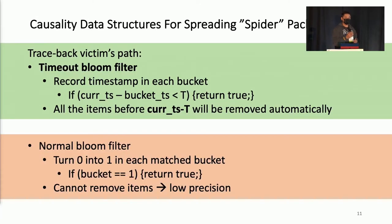To spread those spider packets, we are using causality information maintained in the switches, which is a probabilistic data structure. For example, to trace back the victim's path, we use what we call a timeout bloom filter. A normal bloom filter can only maintain zero or one in the bucket, so they cannot remove items from the bloom filter. So the precision will go very low in the end. But for timeout bloom filter, it can record timestamps. So every bucket will timeout after a certain time. In this way, we can maintain the precision at a very high level.